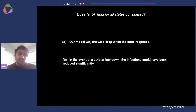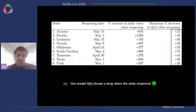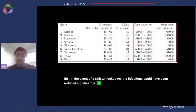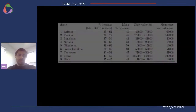We had two conclusions to check for all nine states: first, does Q(t) show a drop when the state reopened, and second, in the event of a stricter lockdown, could infections have been reduced significantly? For all nine states, our model shows a drop in Q(t) when the state reopened, and for all states, in the event of a stricter lockdown, the number of infections could have been reduced by a significant amount. This study again confirmed the validity of the QSIR model as a diagnostic tool.